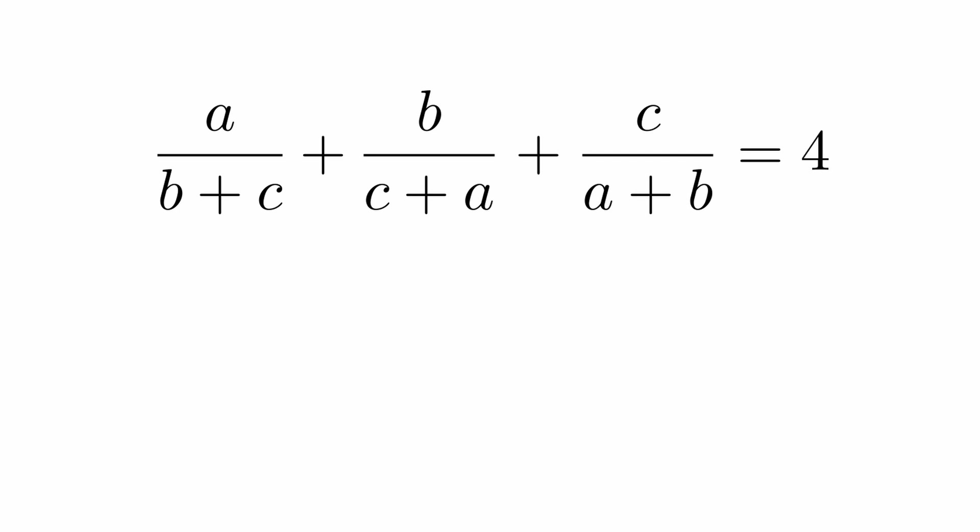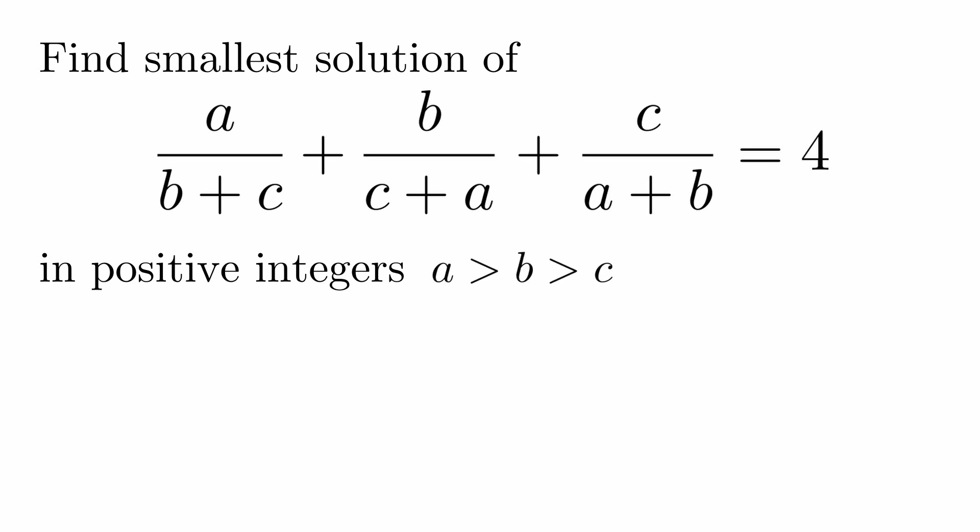and they're going to say, I want to find the smallest set of positive integers a, b, and c that obey this, subject to a greater than b greater than c, so we get most apples and the fewest clementines.